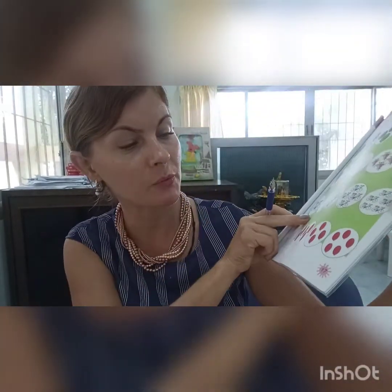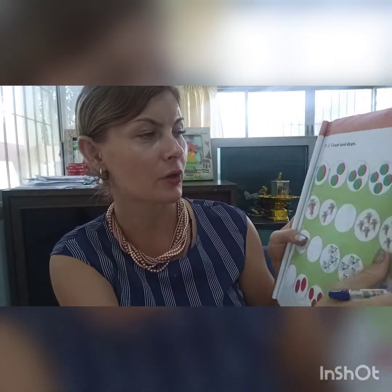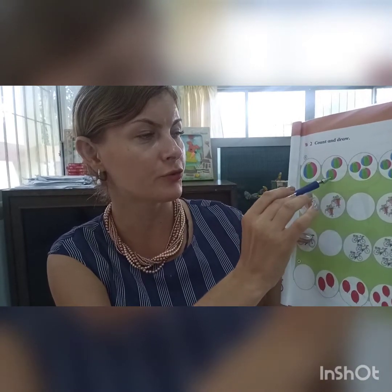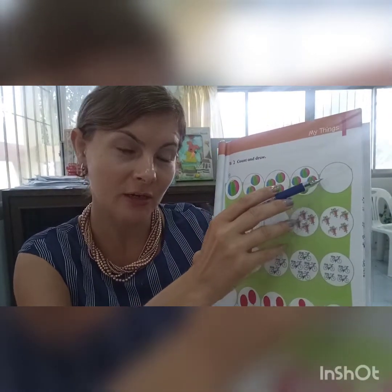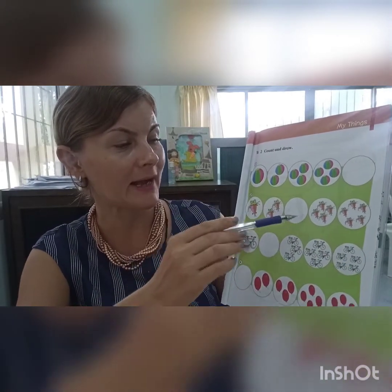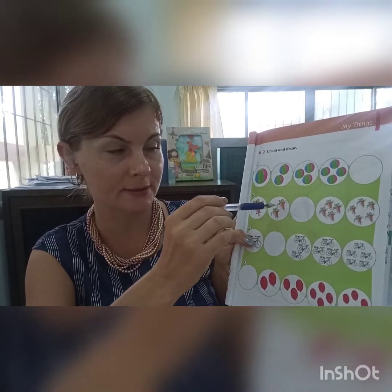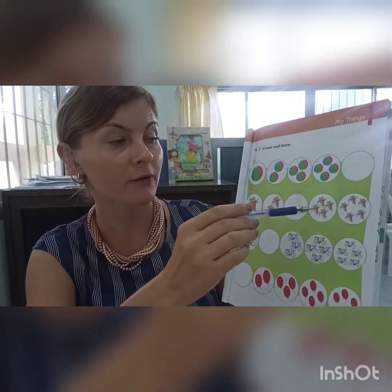Also do this exercise on page number 17 — count and draw. This is one ball, two balls, three balls, four balls — how many balls should be here? Maybe five. Count and then draw five balls here. Let's see how many kites should be here: one kite, two kites, four kites, five kites.